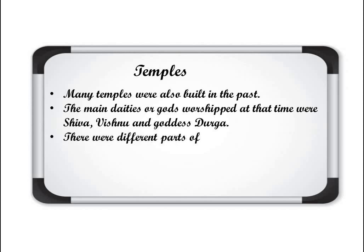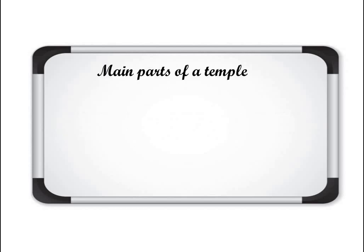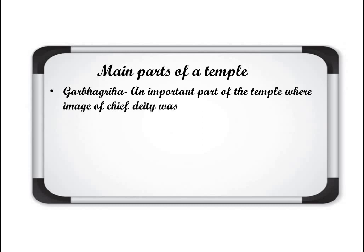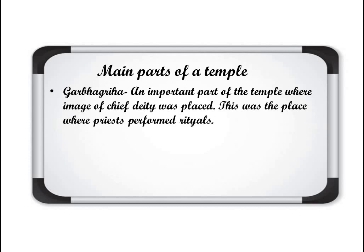There were different parts of a temple. The main parts of a temple are: Number 1 — Garbhagriha — an important part of the temple where the image of the chief deity was placed. This was also the place where priests performed rituals. So Garbhagriha was the very important main part of the temple where the image of the chief deity or main god was placed and the priests performed rituals there.